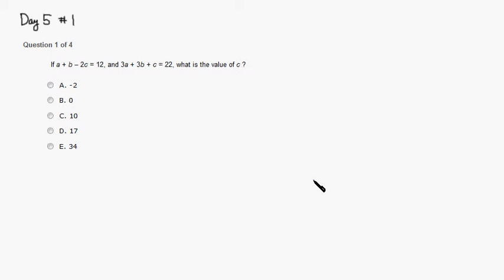Let's go for day five, number one. So we have two equations given, and one is a plus b minus 2c equals 12, and 3a plus 3b plus c is 22.